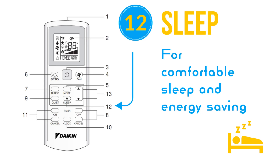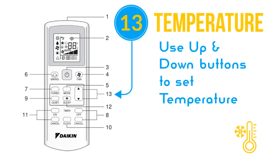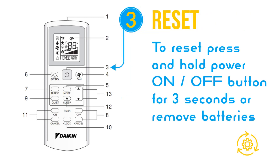Use the up and down buttons to set the temperature as you like. The available temperature range is 16 degrees Celsius to 30 degrees Celsius. To toggle temperature from Celsius to Fahrenheit or Fahrenheit to Celsius, press the up and down buttons simultaneously. To reset the Daikin AC remote, press and hold the power button for 3 seconds, or remove the batteries, wait until the screen display turns off, then insert the batteries.